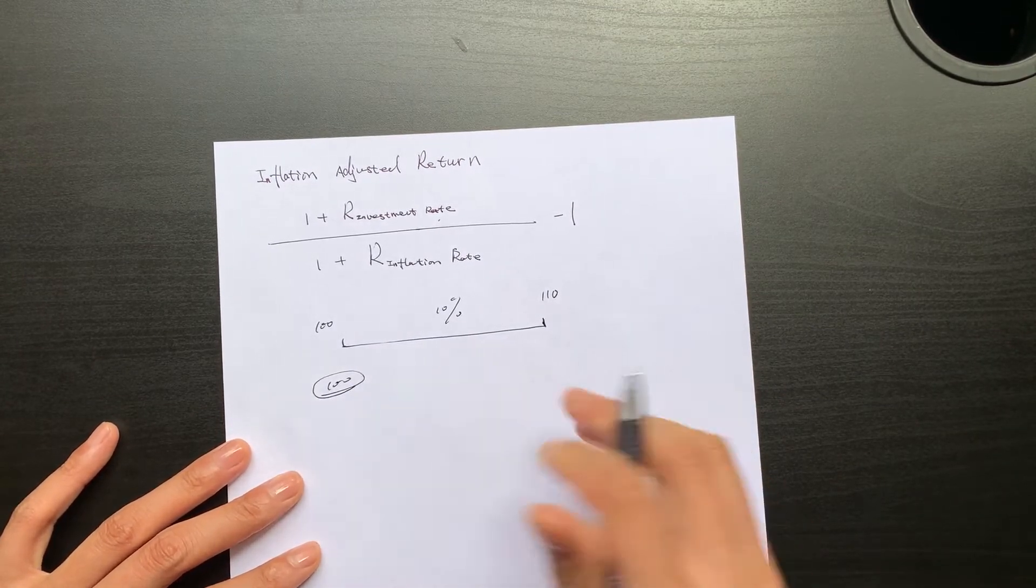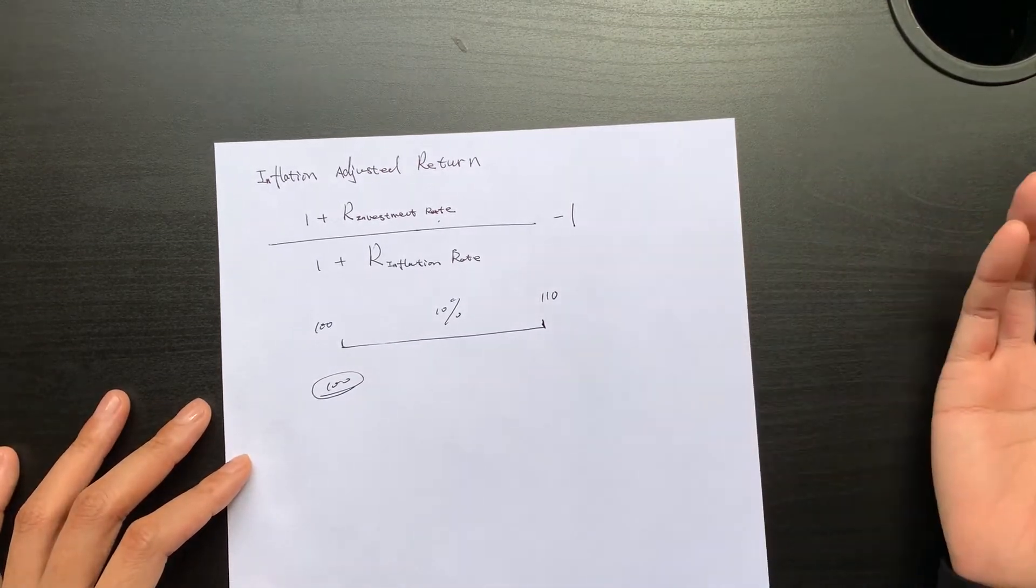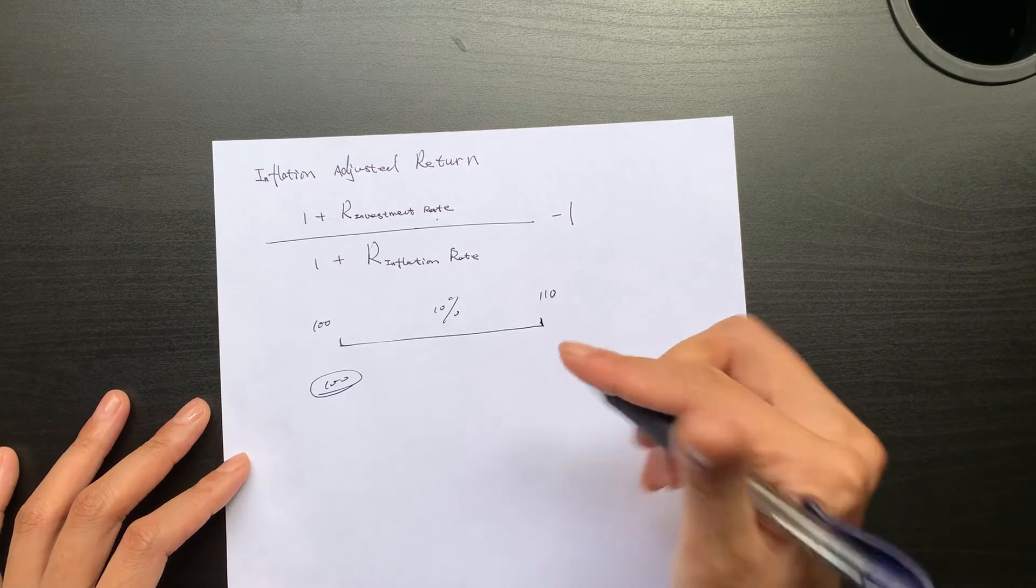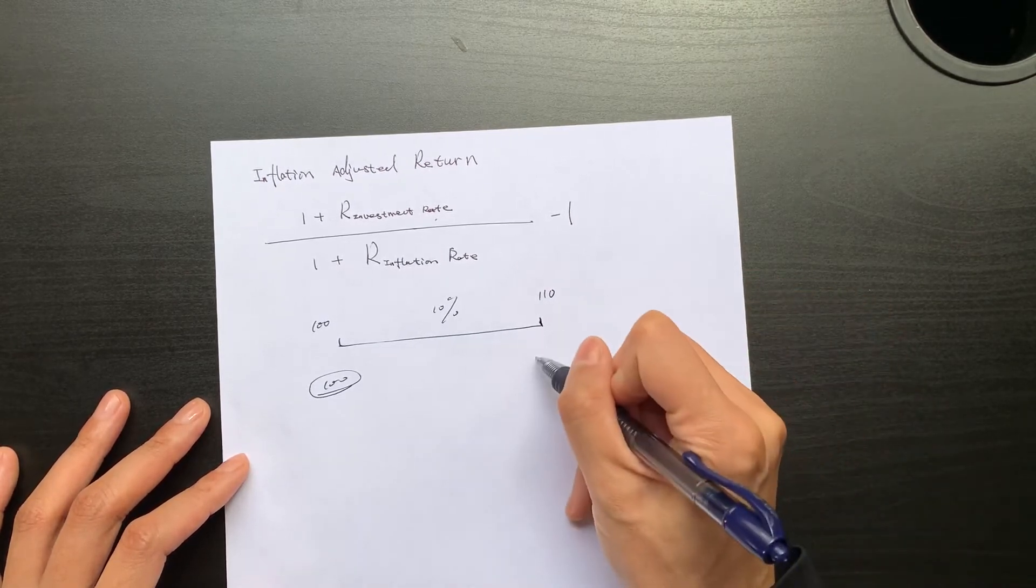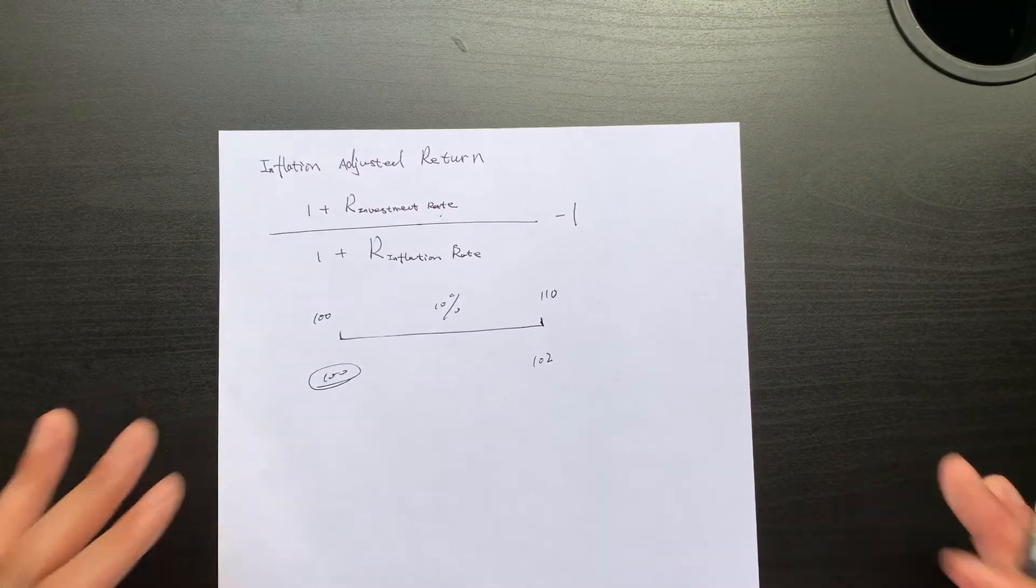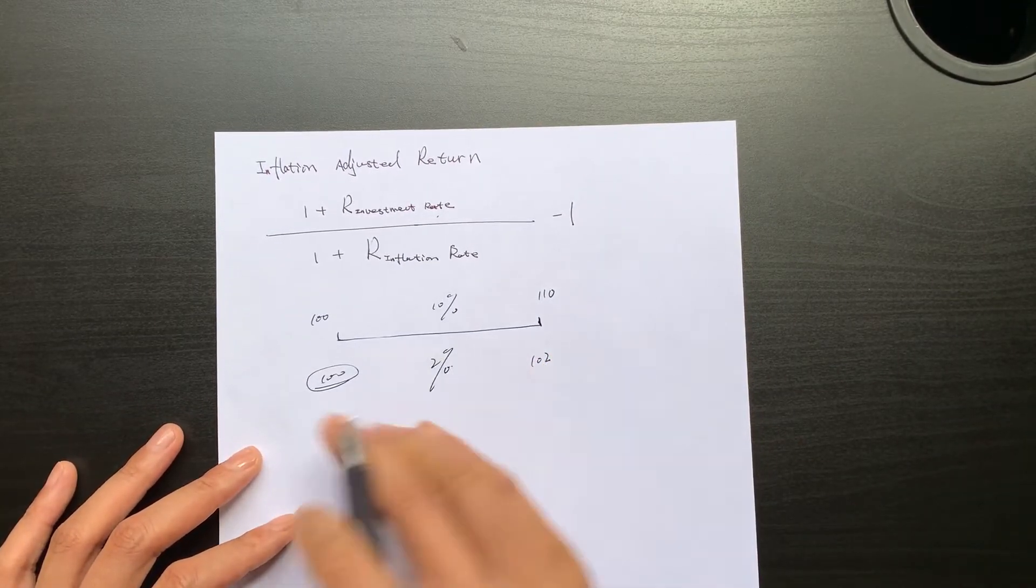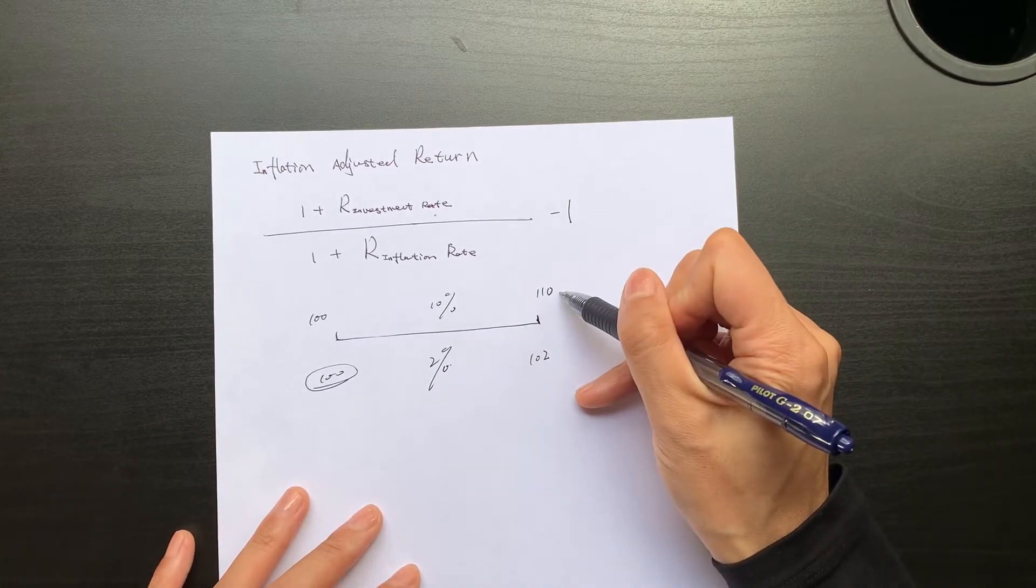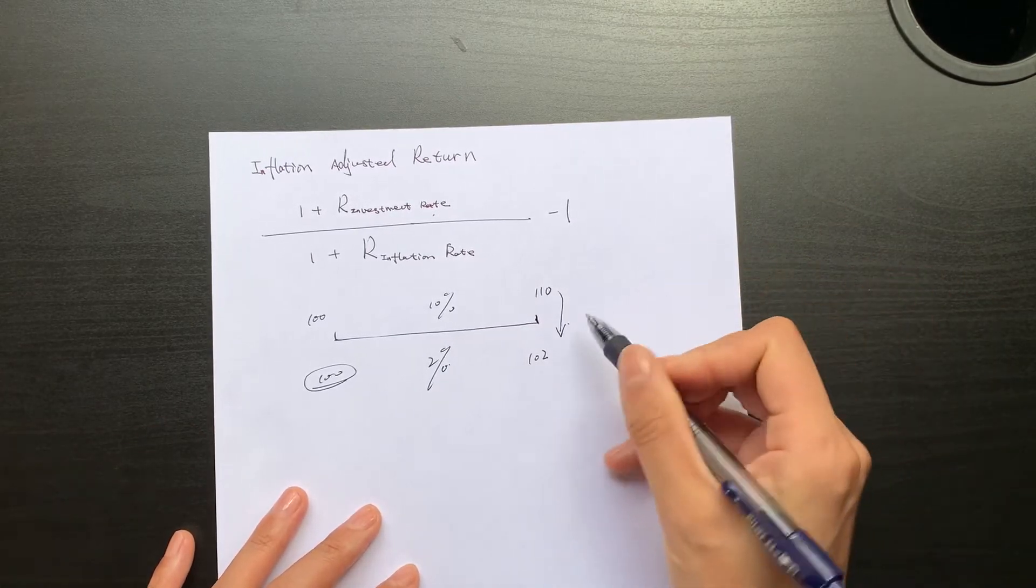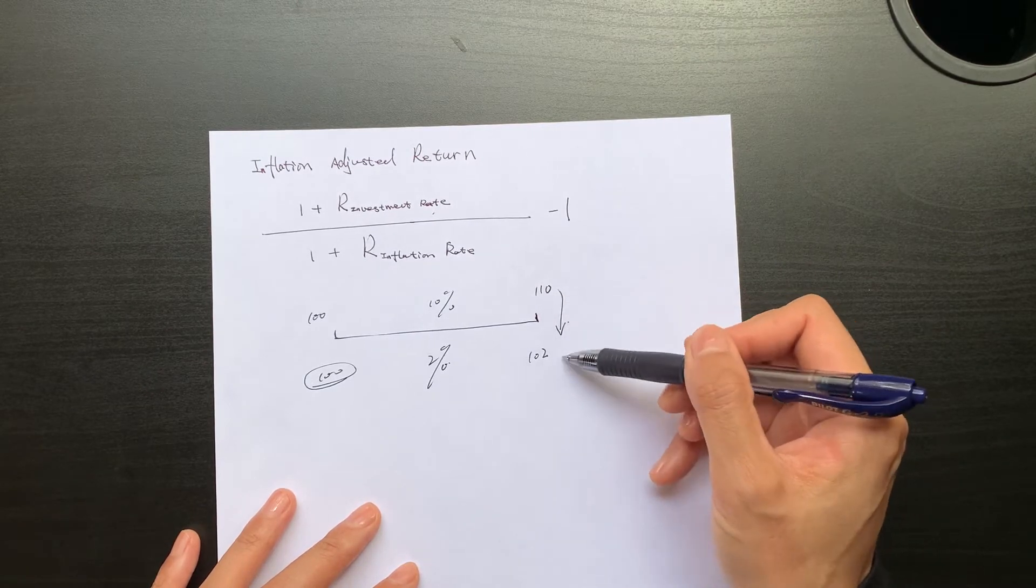What's my return? My return is 10%. But however, at the beginning, with the $100, I could buy food. At the end of the year, the same food I have to pay $102 for. So that's inflation. What's the inflation rate? It's 2%. Your money can buy less.